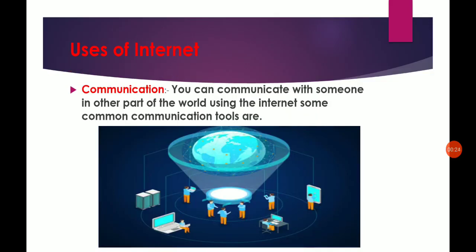The first use of the internet is communication. Communication is the most important part of the internet. You can communicate with someone in any other part of the world using the internet. With the help of the internet we can communicate from one person to another person all over the world — anywhere, anytime.